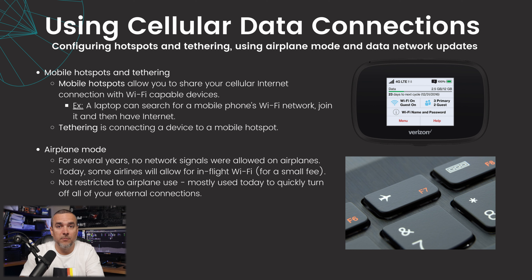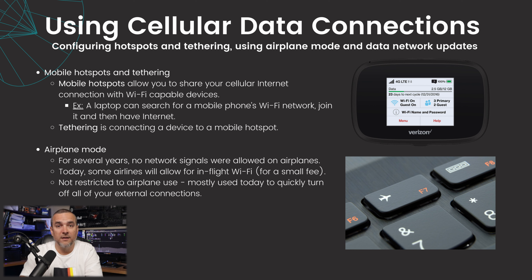Next, let's discuss hotspots, tethering, and airplane mode. Mobile hotspots allow you to share your cellular internet connection with Wi-Fi capable devices. For example, a laptop can search for a smartphone's Wi-Fi network, join it, and have internet access. Tethering is connecting a device to a mobile hotspot. This is convenient when traveling without Wi-Fi access but needing to create a report or edit a spreadsheet — you can use your smartphone's cellular connection as Wi-Fi for your laptop.